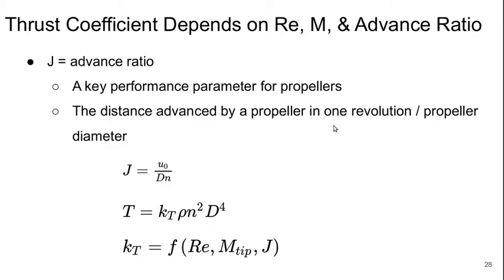We can now introduce some non-dimensional parameters. So a thrust coefficient, which is a non-dimensionalization of the thrust, is going to depend on the Reynolds number, Mach number, and advance ratio. Since we use the symbol J for advance ratio, this is one of the key performance parameters for propellers. Essentially, it's the distance that the propeller moves forward in one revolution, that's U0 over N, divided by the propeller diameter. So it's U0 over D times N.